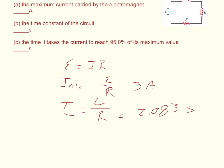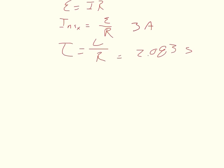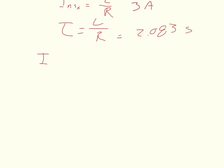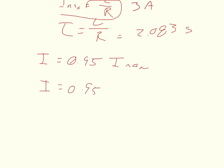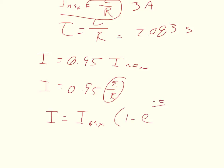For part C, we want the time it takes to reach 95% of the maximum current. I'll define my current I as equal to 0.95·I_max. Since I_max = E/R, I can write I = 0.95·E/R. Setting up the RL circuit equation, the current is: I = I_max · (1 - e^(-t/τ)).